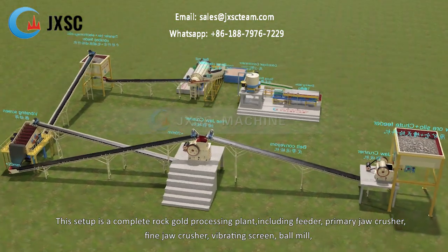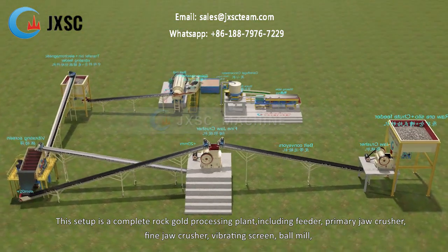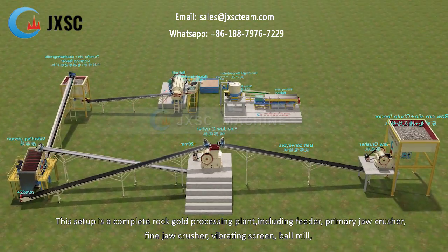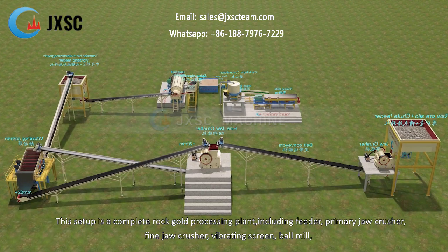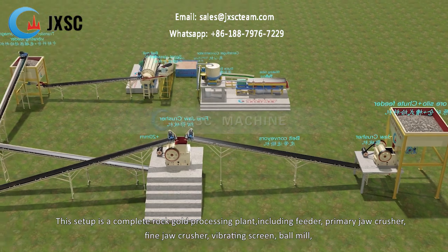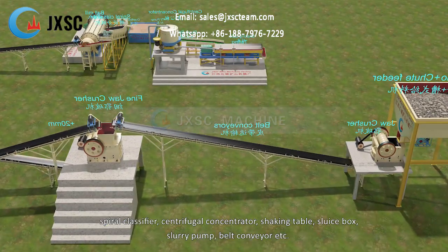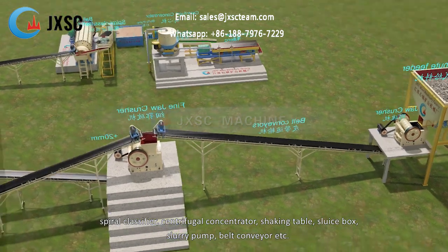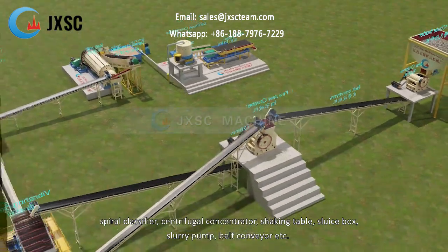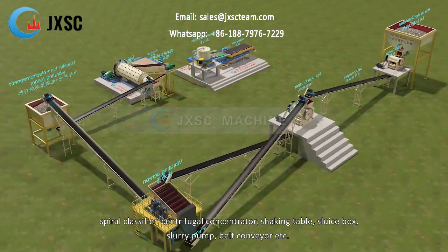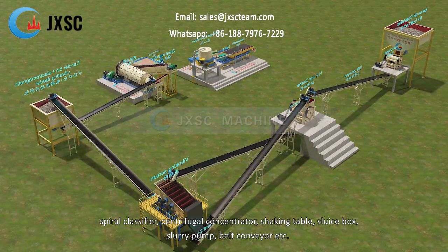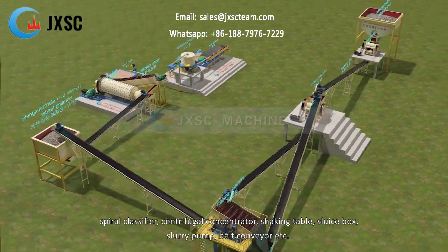This setup is a complete rock-gold processing plant, including feeder, primary jaw crusher, fine jaw crusher, vibrating screen, ball mill, spiral classifier, centrifugal concentrator, shaking table, sluice box, slurry pump, belt conveyor, etc.